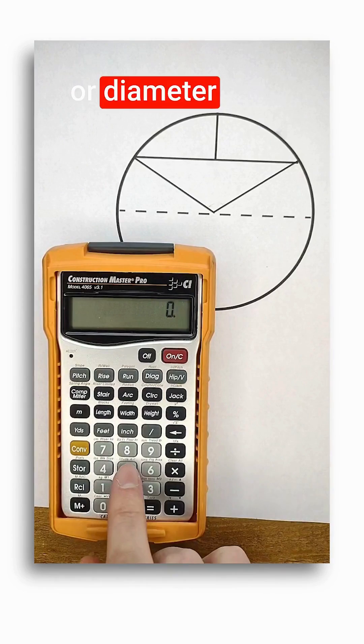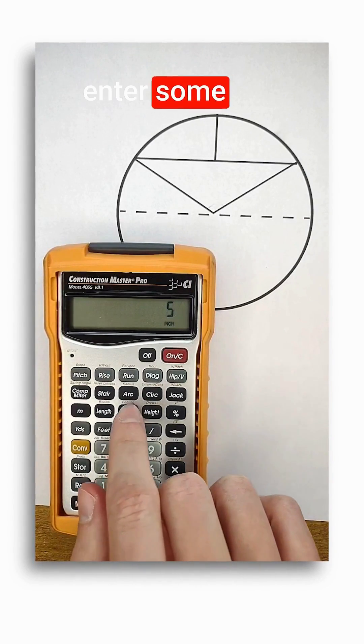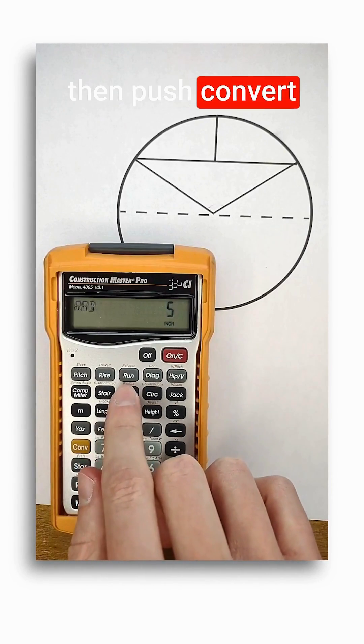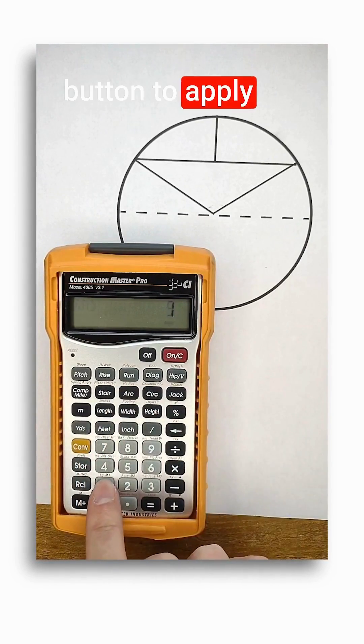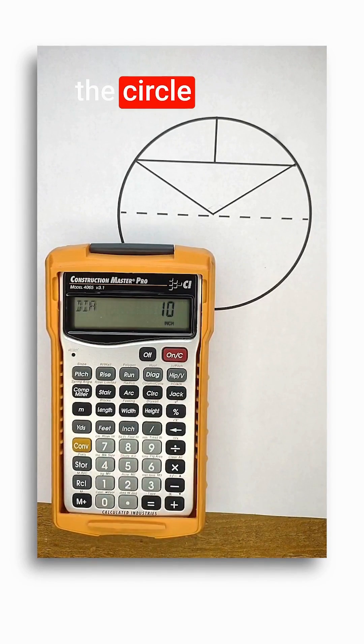Either the radius or diameter could also be entered. For radius, I would enter some unit of length and then push convert before the arc button to apply the secondary function. The diameter just needs a length and then push the circle button.